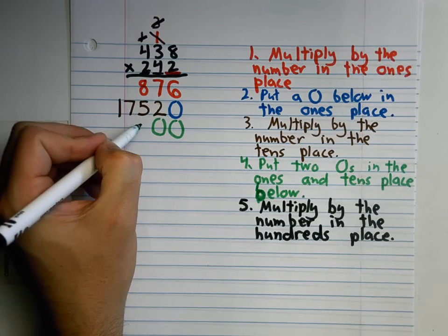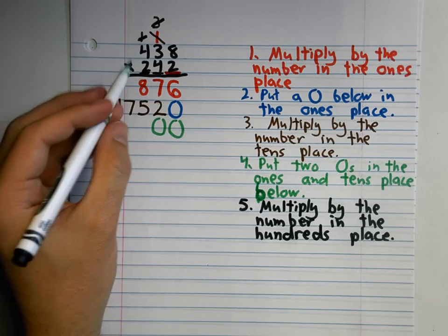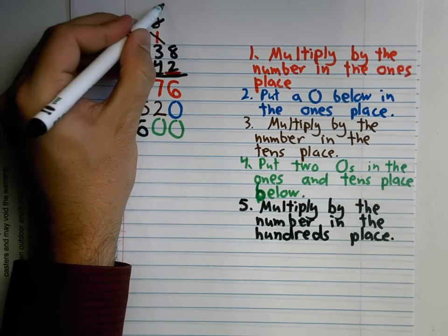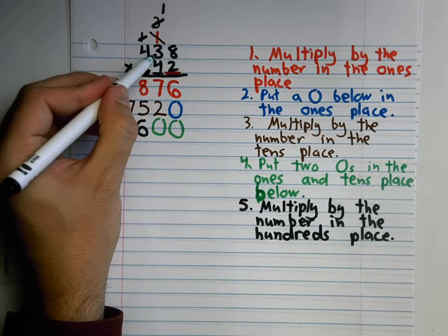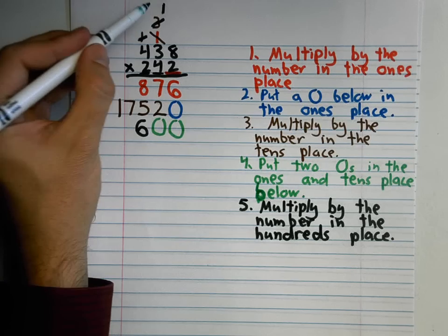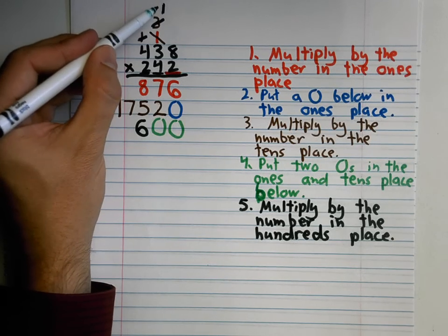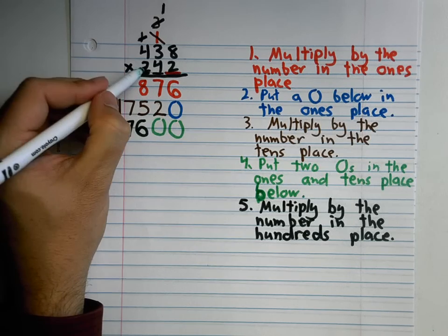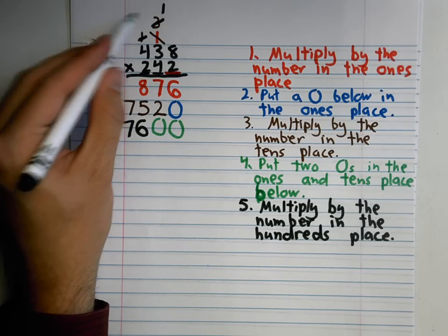2 times 8 is 16. Since I'm multiplying by a hundred, I'm going to keep my hundred down here. Put my 1 up here. 2 times 3 is 6 plus 1 is 7, so put my 7 right here. And I go on: 2 times 4 is 8 plus nothing up here.